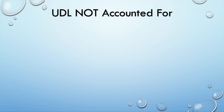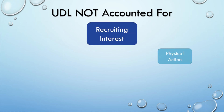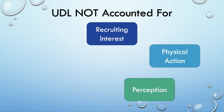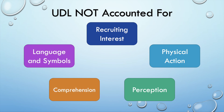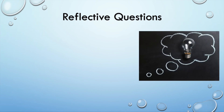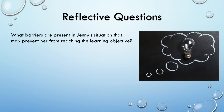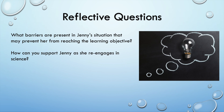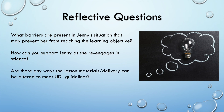Many UDL guidelines are not accounted for in this case study, including recruiting interest, physical action, perception, comprehension, and language and symbols. I will now leave you with three questions: What barriers are present in Jenny's situation that may prevent her from reaching the learning objective? How can you support Jenny as she re-engages in science? And are there any ways the lesson materials or delivery can be altered to meet UDL guidelines? I look forward to hearing your solutions and feedback.